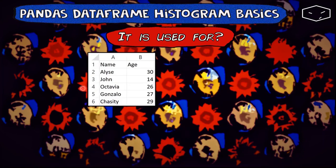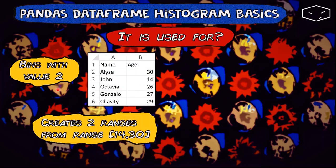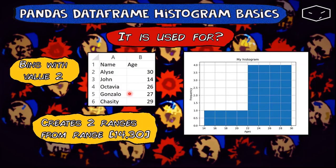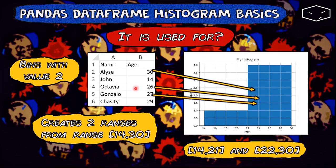In practice we have something like this. This is our example, and we will provide bins with value 2, which means that it will create two ranges from the range 14 to 30. 14 is the minimum age here, and 30 is the maximum age in this dataset. After this we will get two ranges: the first one from 14 to 21, and the second one from 22 to 30. The ages in the range 22 to 30 go here and count for this bar, and the ages from 14 to 21 will count for the first bar.